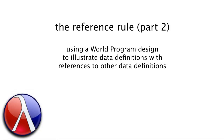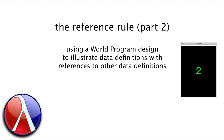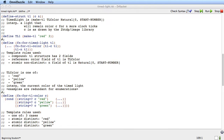In this video, we're going to finish the design of a world program where the data definitions involve the reference rule. As we saw last time, the program is this timed countdown, and we had identified that the changing information was both the current number and current color of the light. Let's quickly review the types from last time. The timed light type comment has a reference here to tlcolor — I'll mark that with an R.